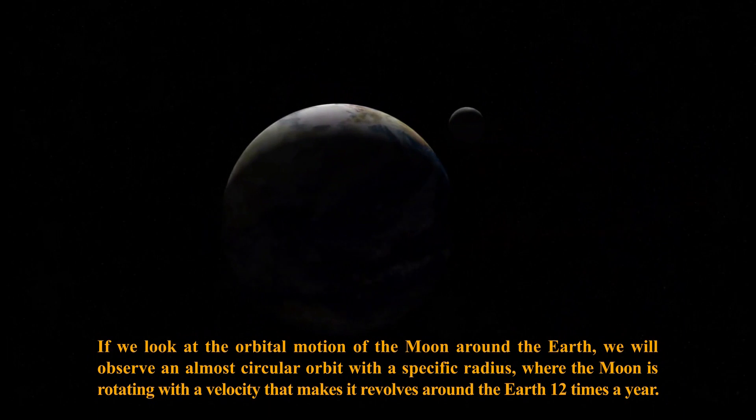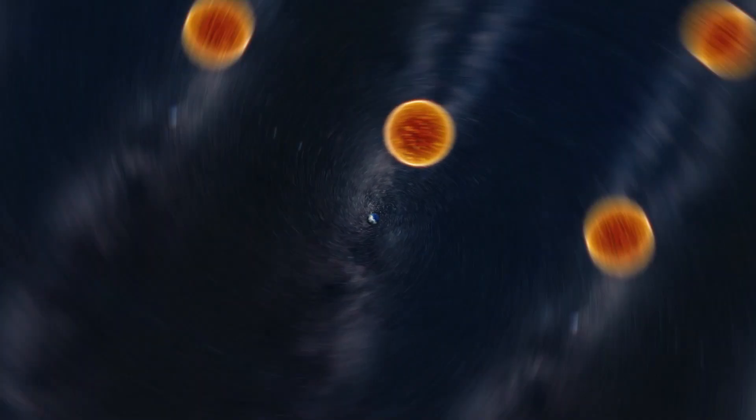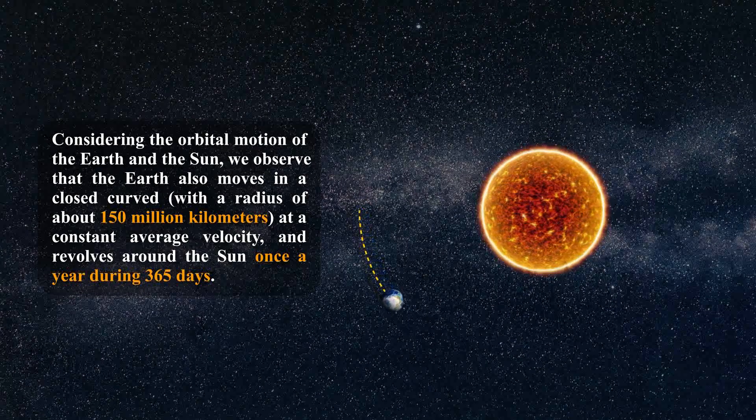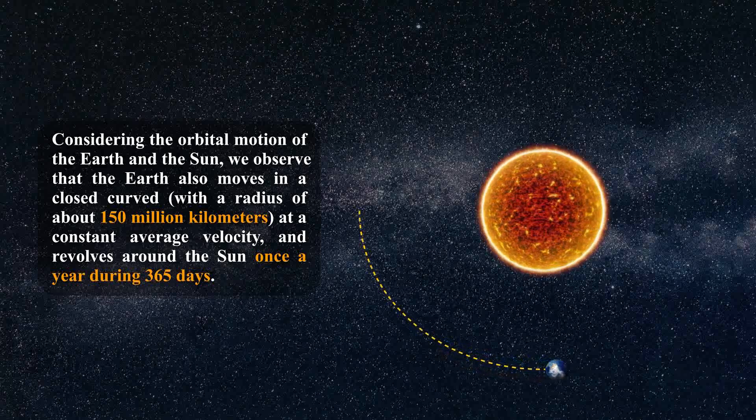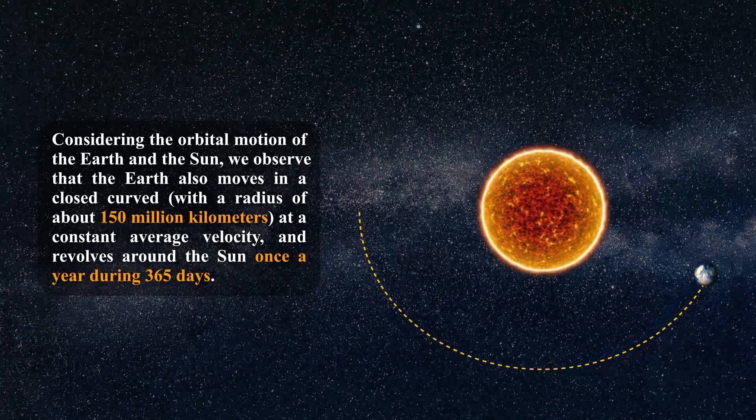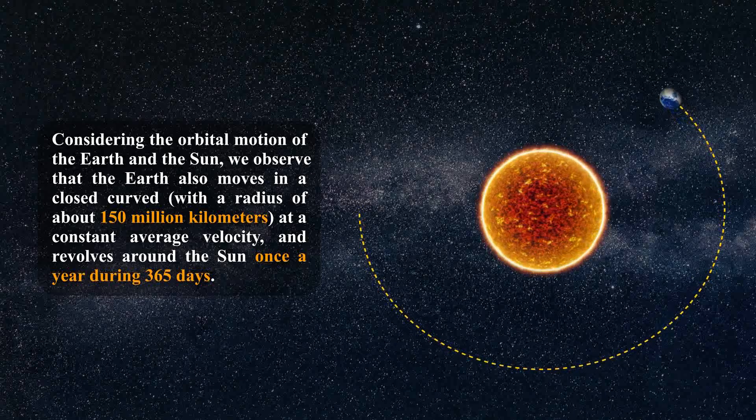Considering the orbital motion of the Earth and the Sun, we observe that the Earth also moves in a closed curve with a radius of about 150 million kilometers at a constant average velocity and revolves around the Sun once a year during 365 days.